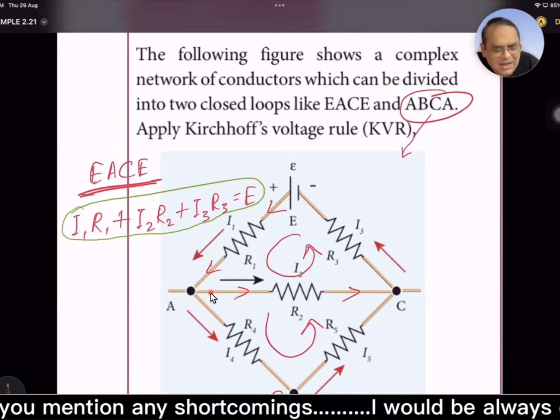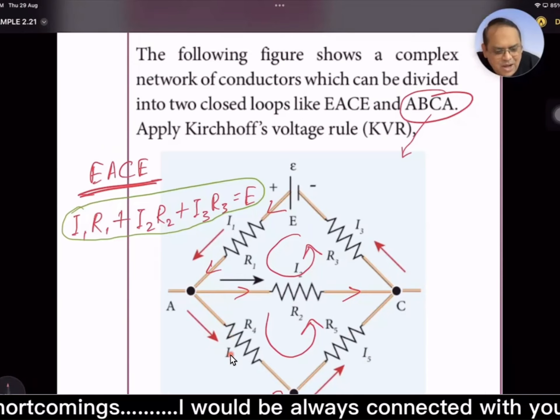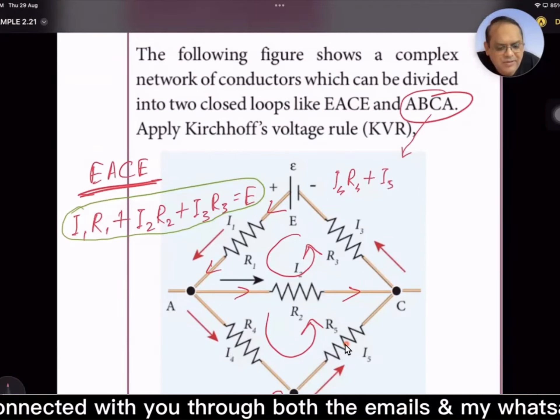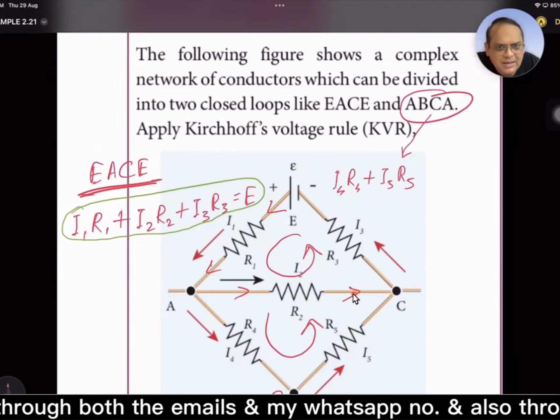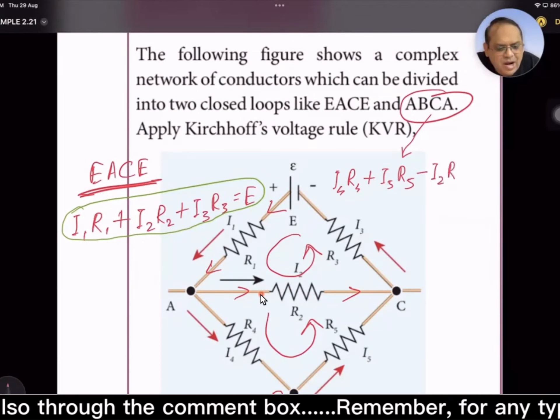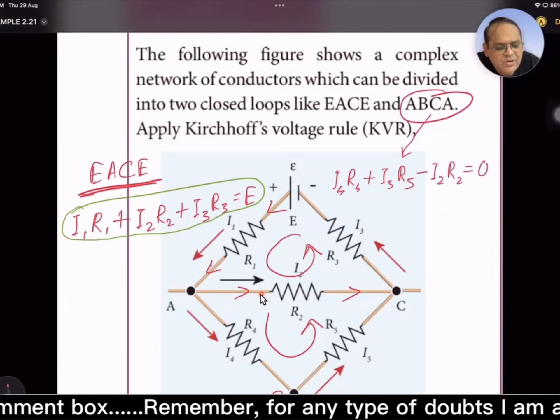So this time let us start with I₄R₄, then plus I₅R₅, and this one is negative of I₂R₂.